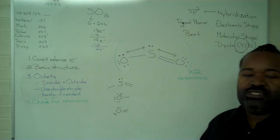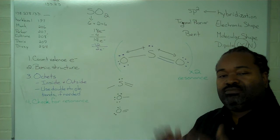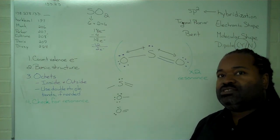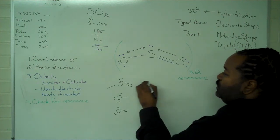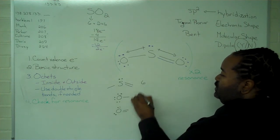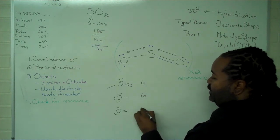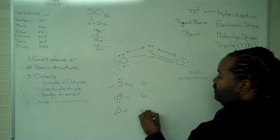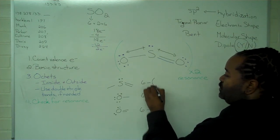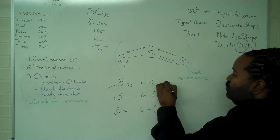So the formal charge is the difference between an atom sitting by itself and its arrangement of electrons once it's in the molecule. So we want to account for the 6 valence that it came into it with and get the difference between that and what's going on with its electrons once it's bonded.